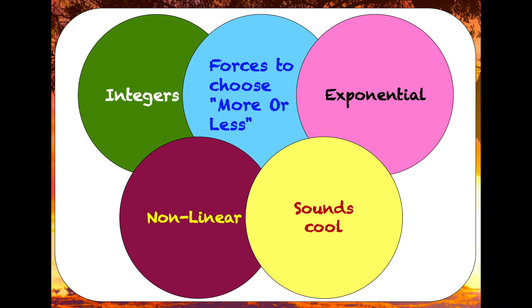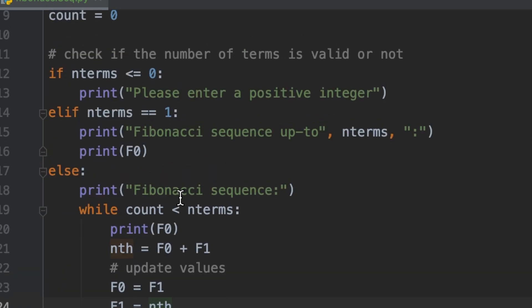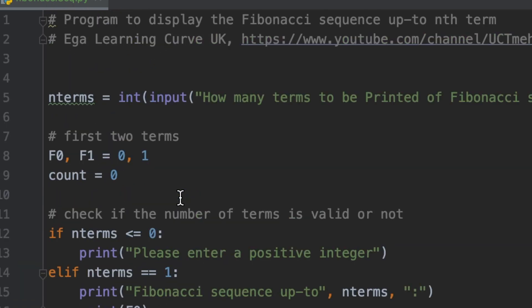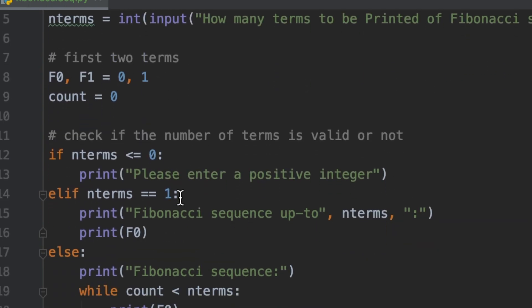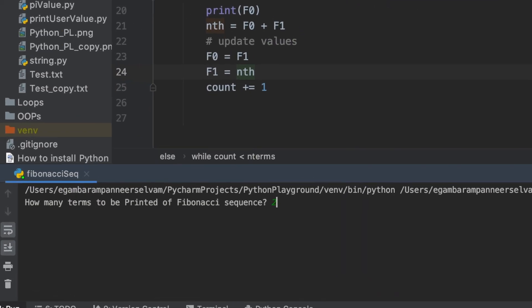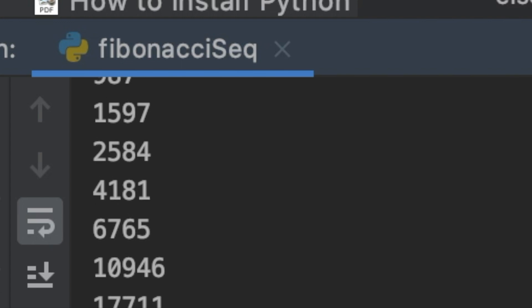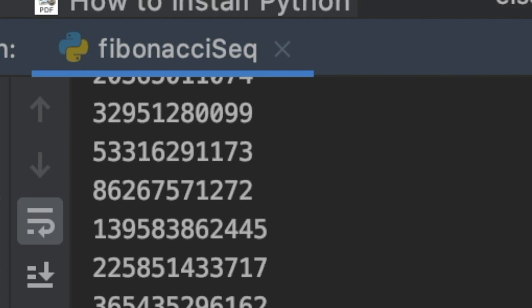I have written a Python program to generate the first n terms of Fibonacci sequence. I will add this program into the description box so that you can play around with it. Let's run for 200 terms now where you can see the first 200 terms of the Fibonacci sequence. You can even run this program for 1000 or 10000 where you will find very big numbers at the end.